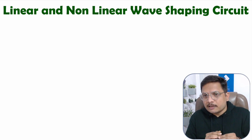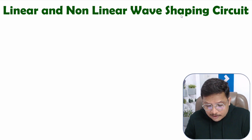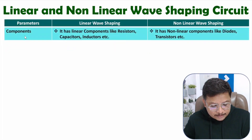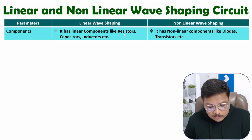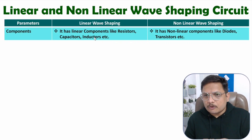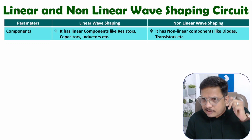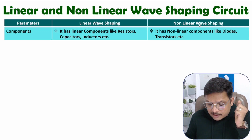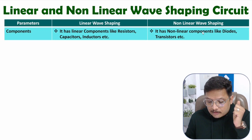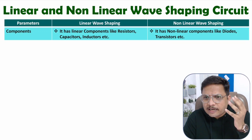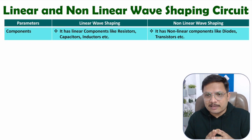Based on application, we should be using wave shaping circuits. Here I'll compare linear wave shaping circuits and non-linear wave shaping circuits based on different parameters. The first parameter is components. In linear wave shaping we will be using linear components — those could be resistors, capacitors, and inductors. Non-linear wave shaping circuits use non-linear components, which could be diodes, transistors, MOSFETs, SCRs, TRIACs, and UJTs.